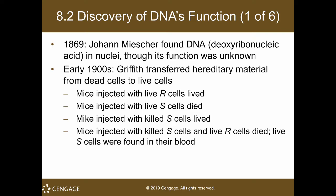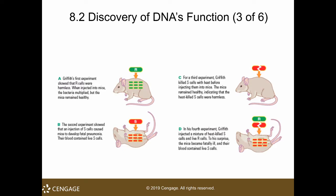In his experiment, he was using two strains of Streptococcus pneumoniae bacteria: the R strain and the S strain. The R strain is the benign strain, so it doesn't kill — when you inject the R strain into mice, they survive. But the S strain is the malignant one; it kills the mice when injected, developing a fatal pneumonia.